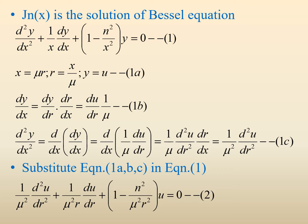Now if we take x = μr and y = u, then when x = μr, r = x/μ. So dy/dx can be written as (dy/dr)(dr/dx). Since dr/dx = 1/μ, we get dy/dx = (1/μ)(du/dr).